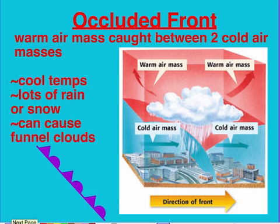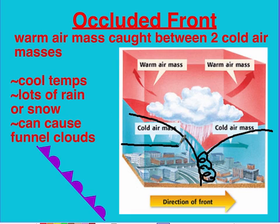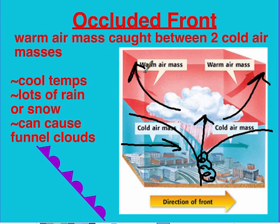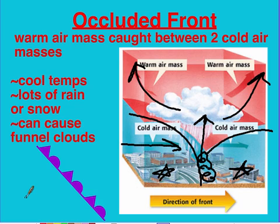The last and most confusing type is the occluded front. This happens when a warm air mass gets caught in the middle of two cold air masses. One cold air mass was already present, and as another cold air mass moves in, it pushes the warm air upward. The two cold air masses end up touching on the ground while the warm air is forced higher into the atmosphere. As the warm air rises, it cools, causing water vapor to condense and creating significant precipitation — either rain or snow. Both sides of the occluded front experience cool temperatures before and after it moves through.